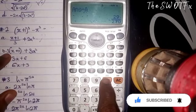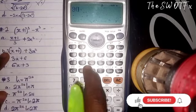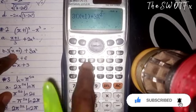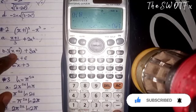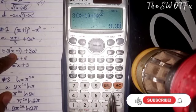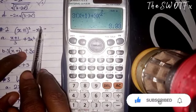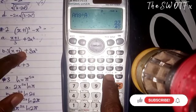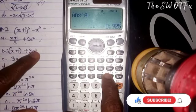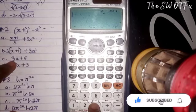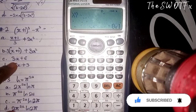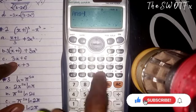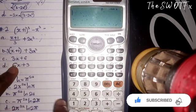Move to the next option: 3 open bracket (x + 1) close bracket plus 3x squared. Press Calc, enter 0.1, then compare: Answer ÷ Alpha A. This also did not give 1, so it is not the answer either. Continue to the next option.